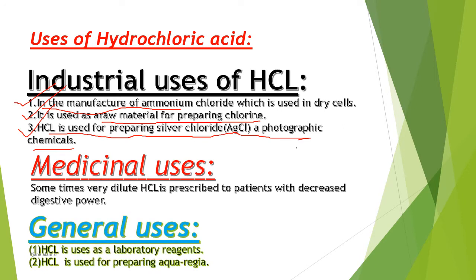General uses of hydrochloric acid. Number 1: HCl is used as a laboratory reagent. Number 2: HCl is used for preparing aqua regia.